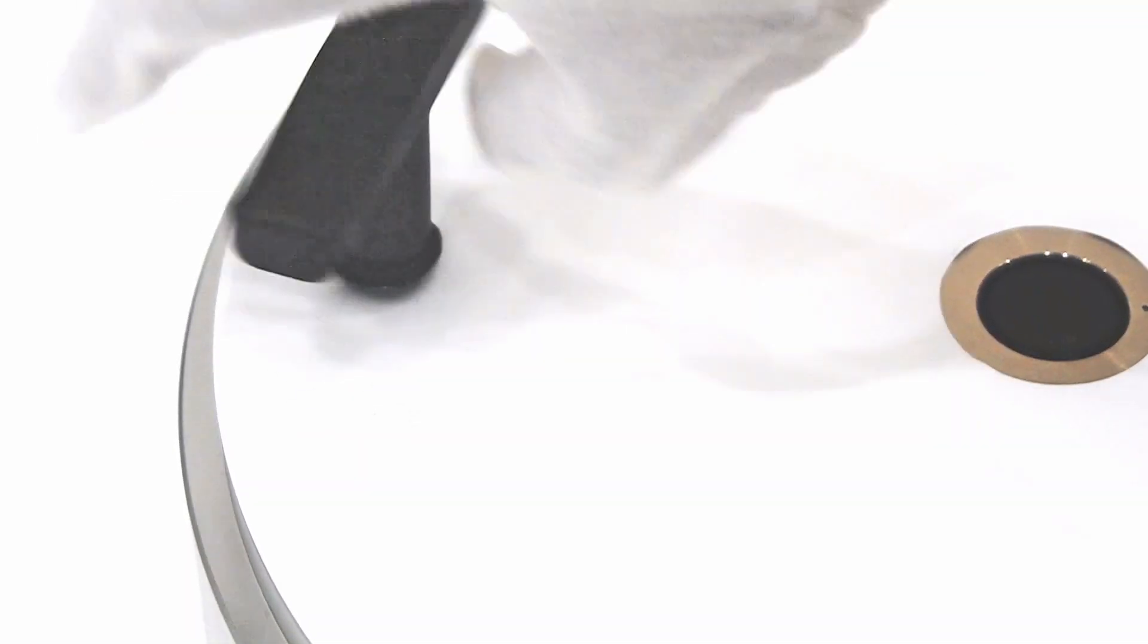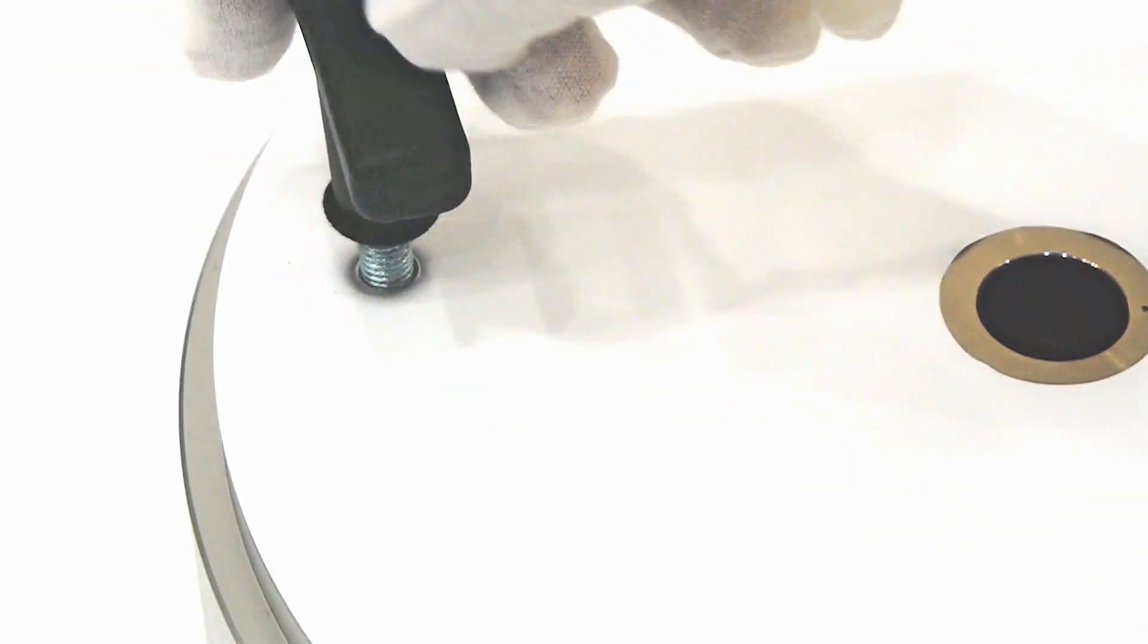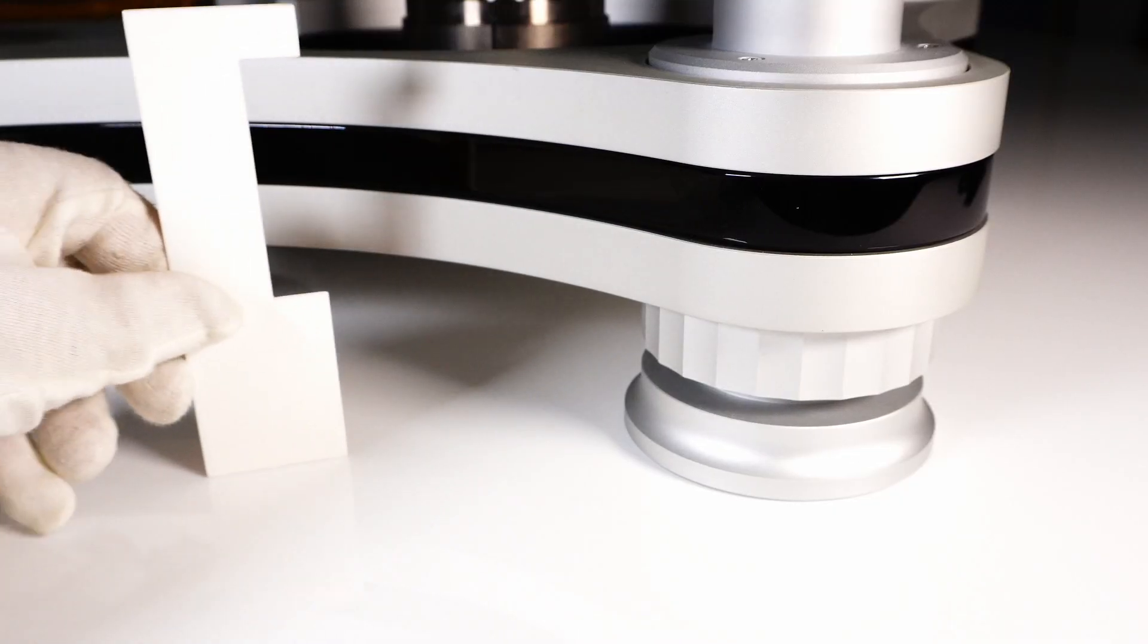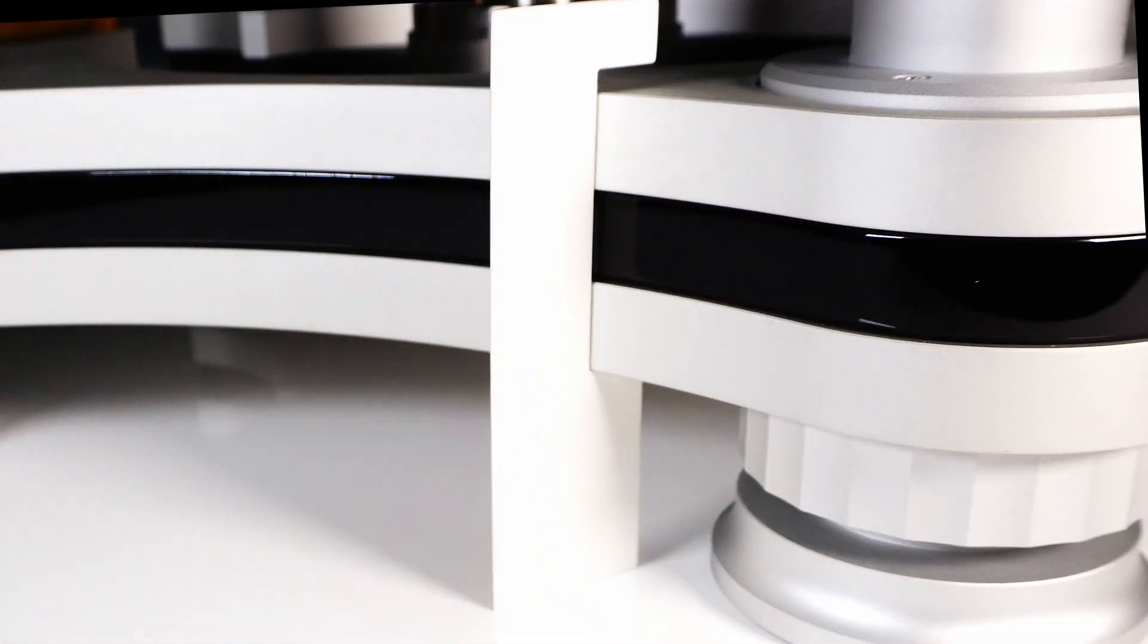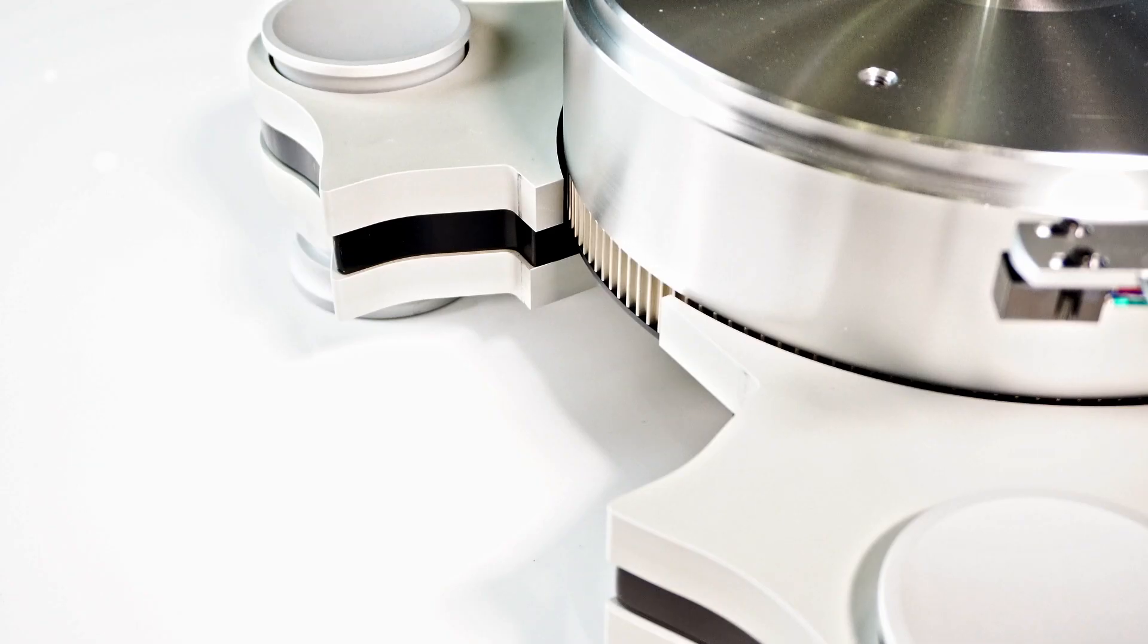Remove the handles from the platter. Check the height of the base unit with the supplied gauge to make sure there is enough clearance between the floor and base unit.